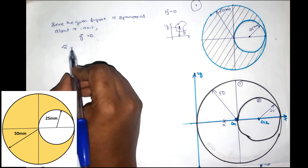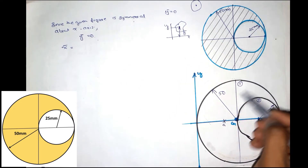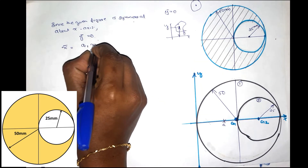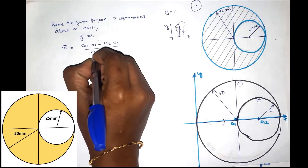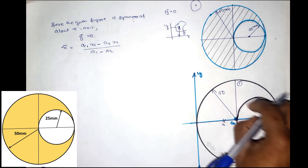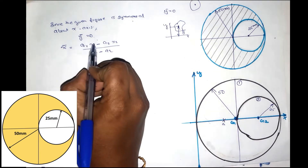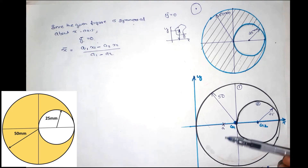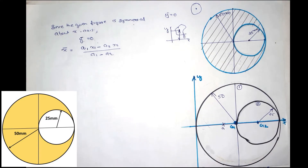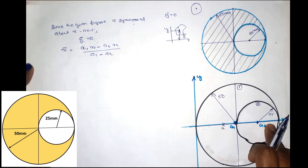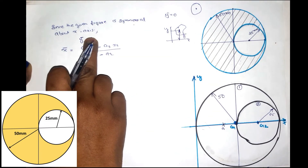This is the X bar equation. We have the shaded portion area with two sections: A1·x1 minus A2·x2 divided by A1 minus A2. We subtract because we have the small circle removed from the shaded portion. Since the figure is symmetrical about the X axis, Y bar is equal to 0.